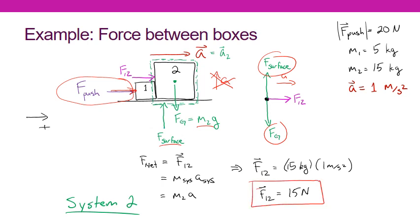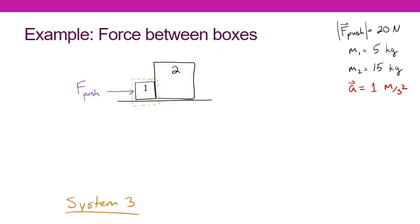The force of box 1 on box 2 is a positive 15 Newtons, which checks out — to the right was positive, and we expect box 1 to push box 2 to the right. So we've worked out what the force of box 1 on box 2 is. All that's left is to figure out the force of box 2 pushing back on box 1. I'm going to define a new system — this time, only around box 1.